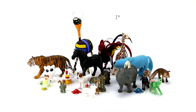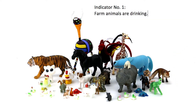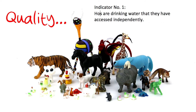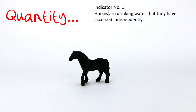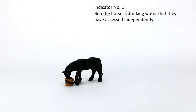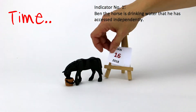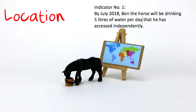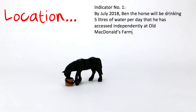For example, imagine the indicator 'farm animals are drinking water.' This needs more detail to be meaningful, so let's apply the QQTL rule. Quality: what are the standards for this measurement? Are they drinking only when prompted or independently? And what kind of farm animals do you want to see drinking? Quantity: how big is your target group? Time: when do you expect this to happen by? Will the indicator take one measurement at the end of the project or monitor the situation throughout? And location: where is this going to happen — in one or more locations?